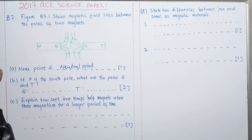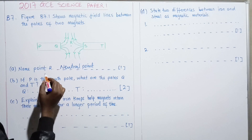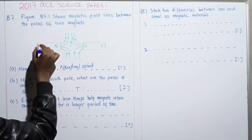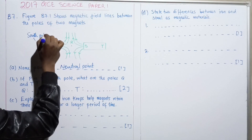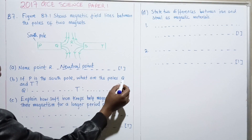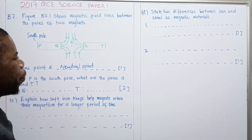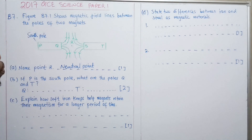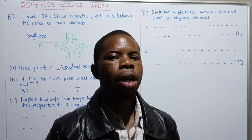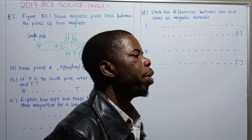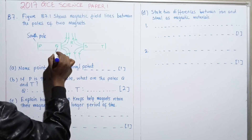We move to part B. It says: if P is the south pole, what are the poles Q and T? So we are told that P is the south pole. This is a very simple question. To answer it you must know that a magnet has two poles — the south pole and the north pole. If P is the south pole, then automatically Q becomes the north pole.